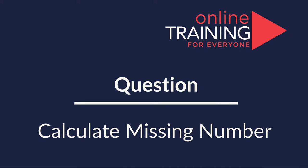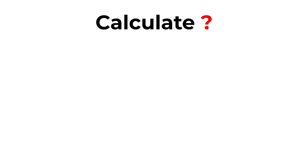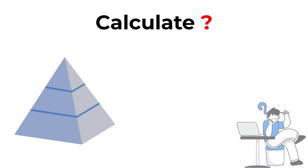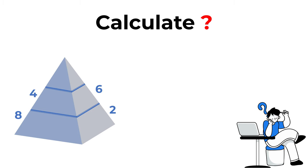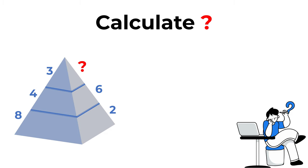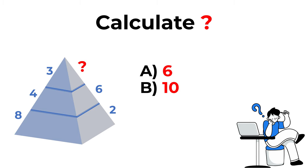Here's a cool question you frequently see on the test. You need to calculate the question mark. You're presented with a three-layer pyramid: the bottom layer has numbers 8 and 2, the middle layer has numbers 4 and 6, and the top layer has number 3 and a question mark. The question mark can be one of four values: choice A, 6; choice B, 10; choice C, 7; choice D, 2.